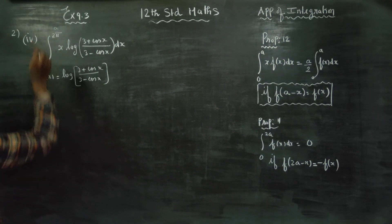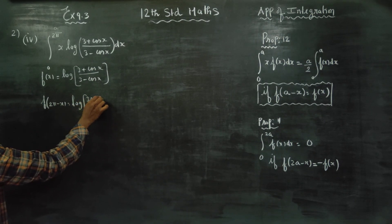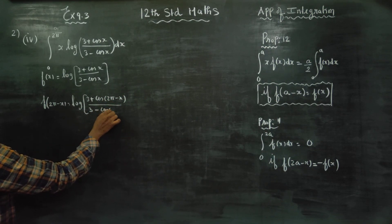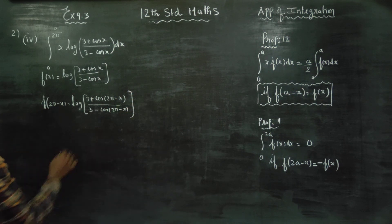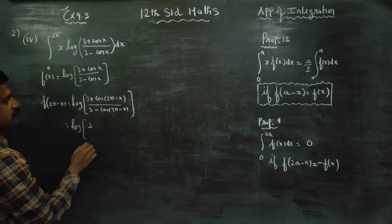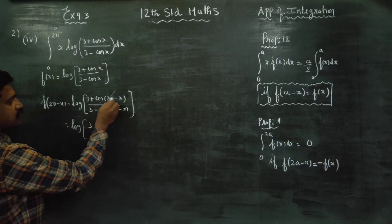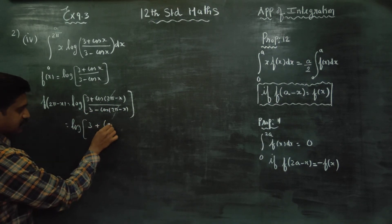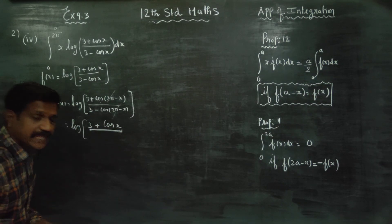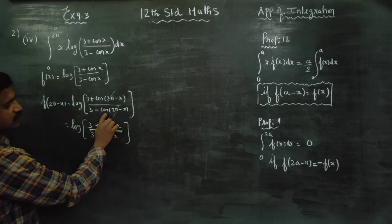Now checking a−x: the value of a is 2π, which equals 360 degrees. cos(−x) = cosx because cosine is an even function. So cos(2π−x) = cosx. Similarly, in the denominator, cos(2π−x) is again cosx because cos is an even function.